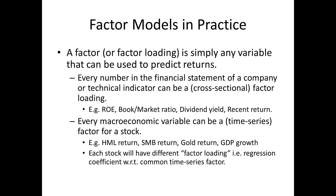There are also factors that are macroeconomic variables — things such as the return of gold, GDP growth, or the return of an HML portfolio. HML portfolio is the difference in returns between a portfolio of high book-to-market value stocks and low book-to-market value stocks — the spread between value and growth stocks. SMB return is the difference between small cap stocks and big cap stocks. Another macroeconomic factor is winners minus losers, which is a momentum factor.